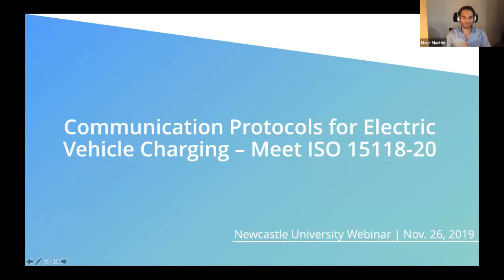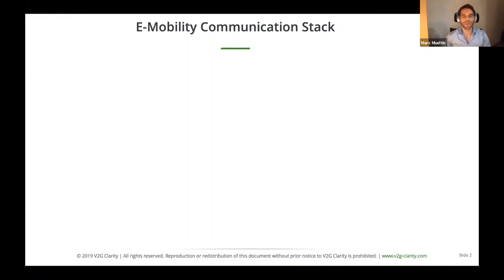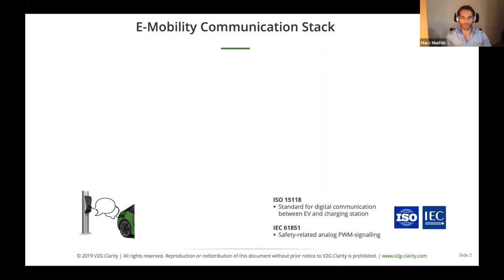You already gave a good introduction to the protocols like front-end and back-end protocols. I want to build upon that and start with what I call the e-mobility communication stack. At the very lowest level, we have IEC 61851, which is a safety-related protocol. The charging station and the car exchange pulse-width modulation signals — an analog signal the charging station uses to tell the vehicle the amount of amps it can use to charge its battery.